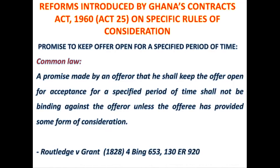And this common law position is evidenced in the case of Routledge versus Grant — Routledge is spelled R-O-U-T-L-E-D-G-E, Grant is G-R-A-N-T — reported in 1828, 130 England Reports at page 920. That is the common law position.